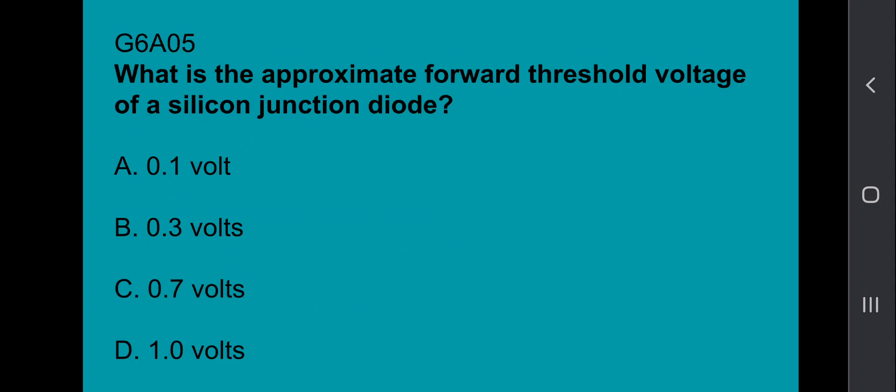G6A05: What is the approximate forward threshold voltage of a silicon junction diode? 0.7 volts.